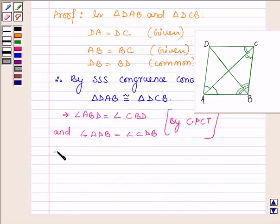So this implies diagonal BD bisects angle B as well as angle D.